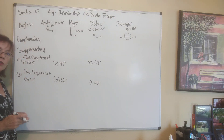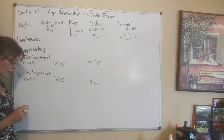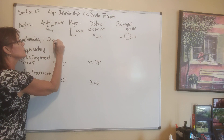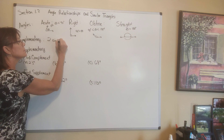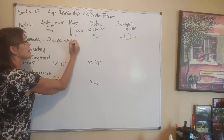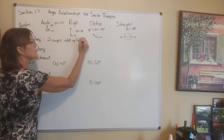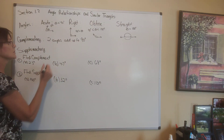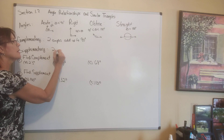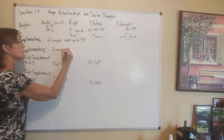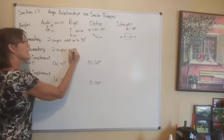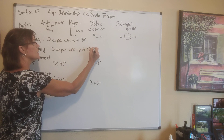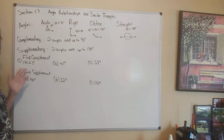Complementary angles — I think you've heard these terms before — are two angles that add up to 90 degrees. Supplementary angles are two angles that add up to 180 degrees.